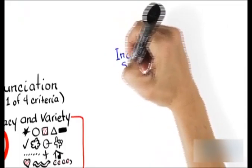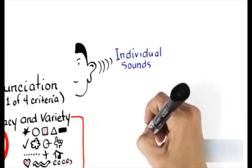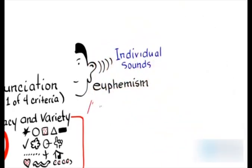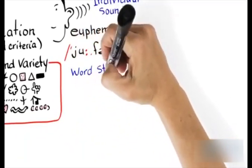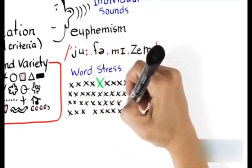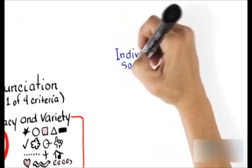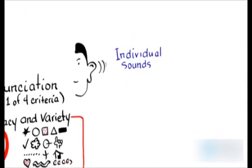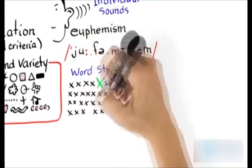For pronunciation, consider intonation, sentence stress, and rhythm. Individual sounds can sometimes be confusing — for example, the word 'euphemism.' Word stress is important: stressing the wrong syllable is a frequent error, for instance 'mistake' and 'democracy.'